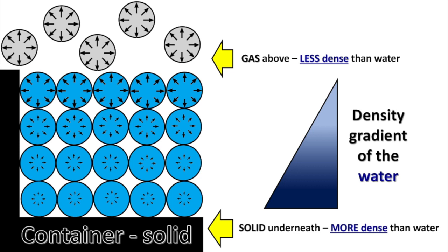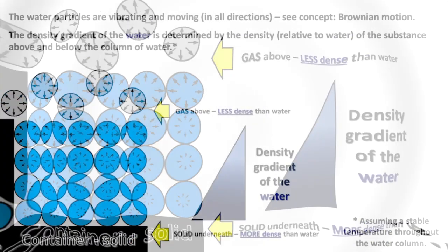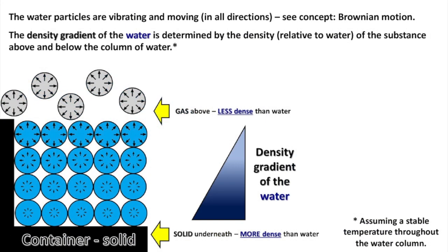Density gradient of the water: the gas above is less dense than the water, and the solid underneath is more dense than the water. The water particles are vibrating and moving in all directions — see the concept of Brownian motion. The density gradient of the water is determined by the density relative to water of the substance above and below the column of water, assuming a stable temperature throughout the water column.